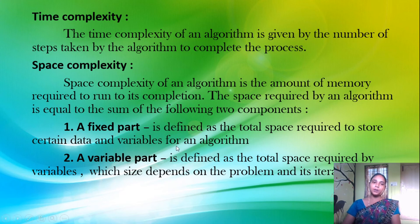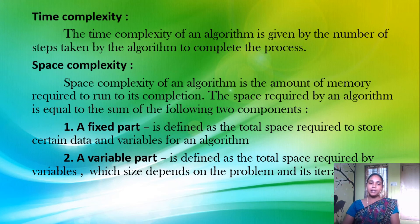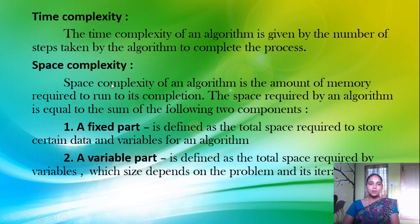Time complexity: the time complexity of an algorithm is given by the number of steps taken by the algorithm to complete the process. The algorithm's time complexity measures the time taken to run to its completion. Space complexity refers to the amount of memory space required by the algorithm to run to its completion.